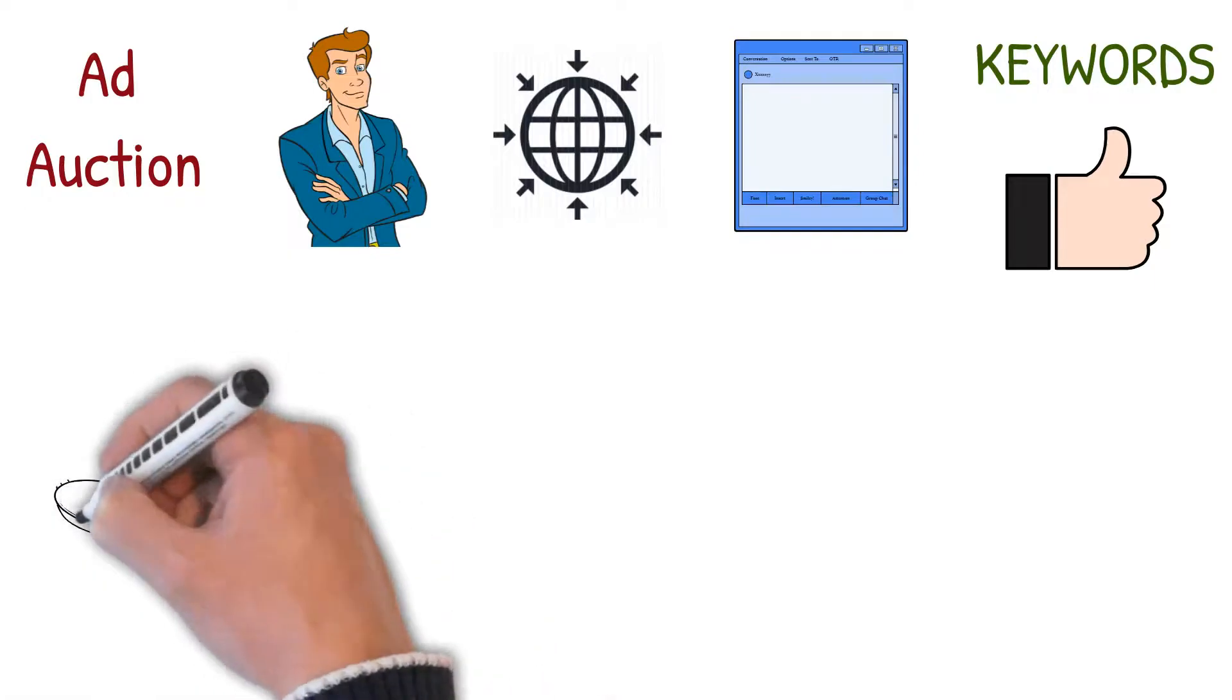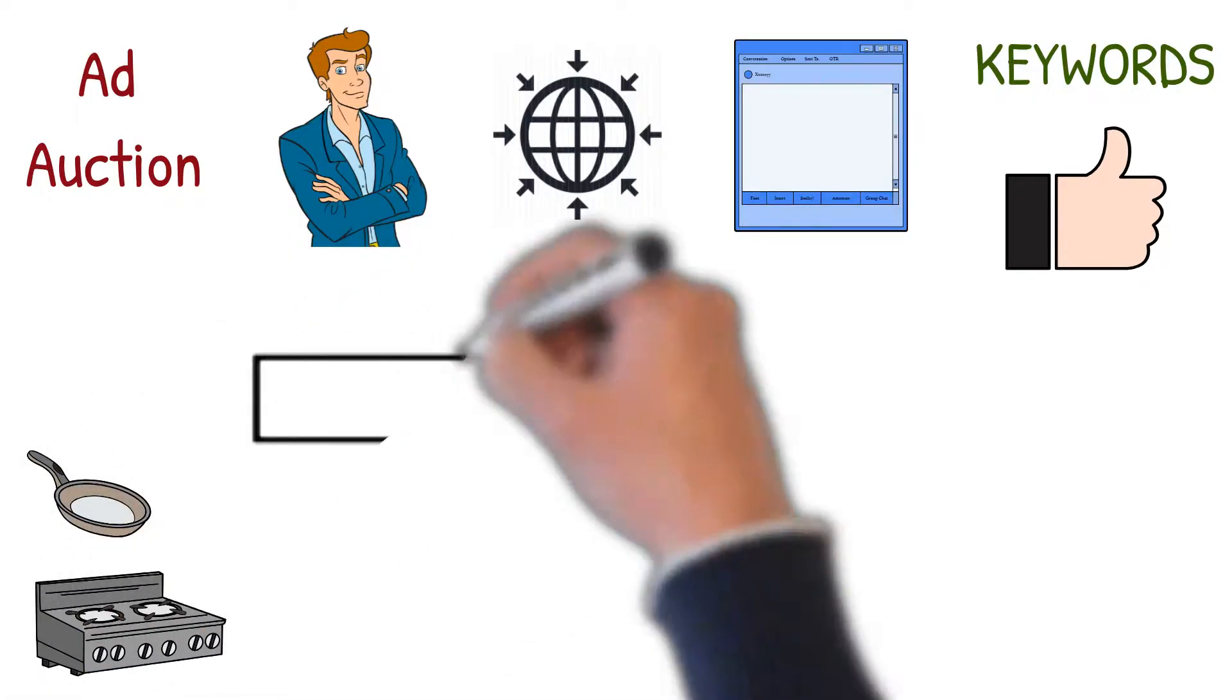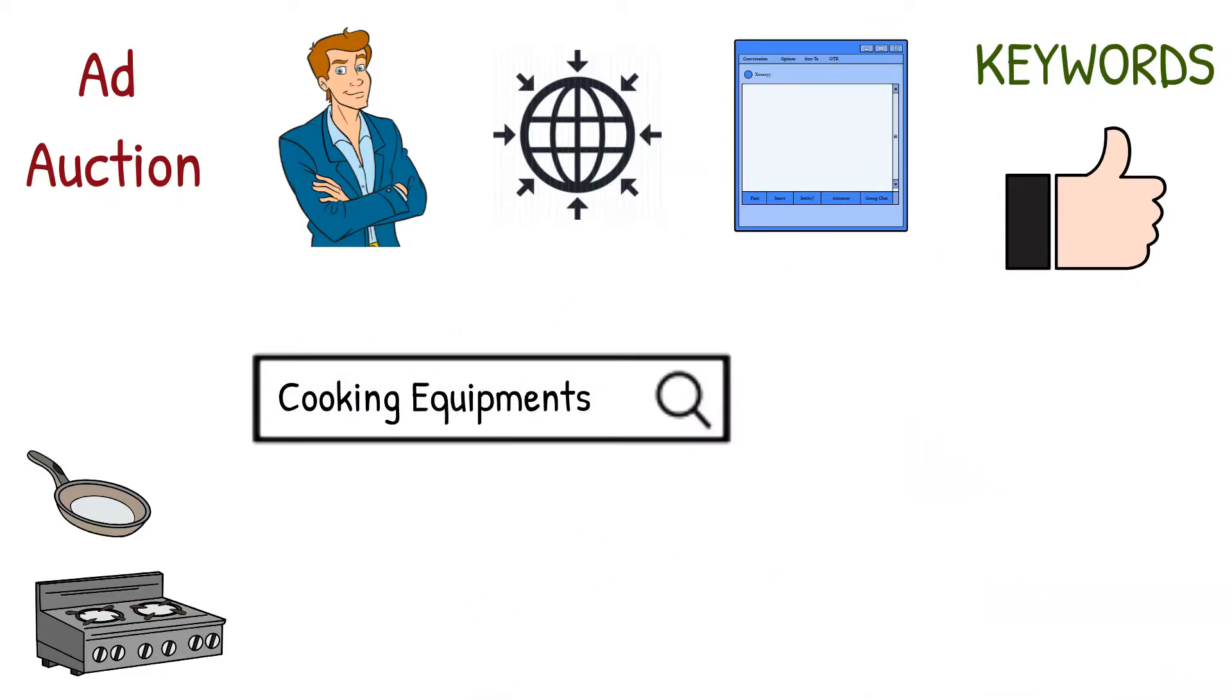The keywords work in a way that if a customer is interested in cooking equipments, then the interested party is going to search for cooking equipments on the search engine to find the sellers or retailers.